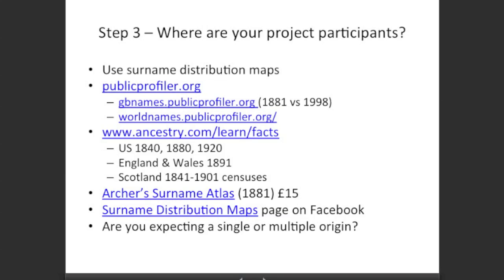The third step is to determine where your project participants are likely to be living — and the answer in many cases is America, because so many people emigrated there. We'll look at James Irvine's project to see how that affected his particular project. Various surname distribution maps are available: Public Profiler looks at GB names and also world names; Ancestry.com has a free breakdown of US states based on the 1840, 1880, and 1920 censuses, and England and Wales based on the 1891 census, plus all Scottish censuses from 1841 to 1901, broken down by county.